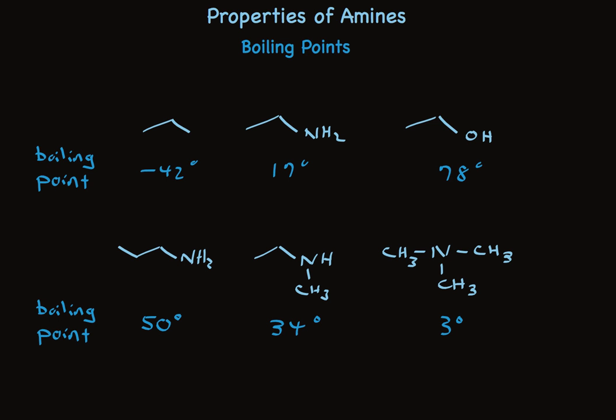These boiling points provide additional evidence about hydrogen bonding. All three amines have the same number of carbon atoms, but we have a primary amine, a secondary amine where some steric hindrance reduces hydrogen bonding, and a tertiary amine which has no hydrogen and therefore no hydrogen bonding. The primary amine boils higher than the secondary, which boils much higher than the tertiary. So hydrogen bonding dramatically affects the boiling points of amines.